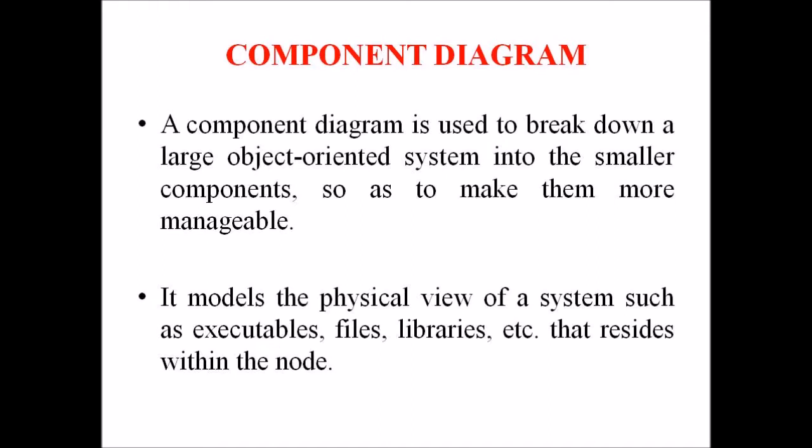This diagram visualizes the relationship as well as the organization between the components present in the system, and the component diagram helps in forming an executable system. A component is a single unit of a system which is replaceable and executable. The implementation details of a component are hidden and it necessitates an interface to execute a function. It is like a black box whose behavior is explained by the provided and required interfaces.